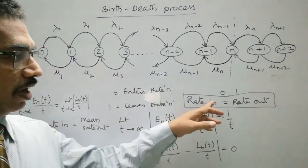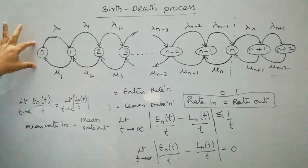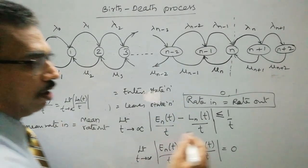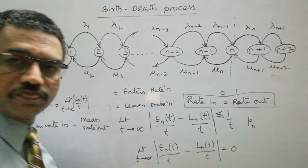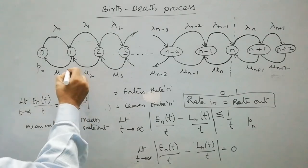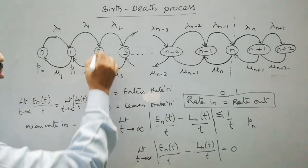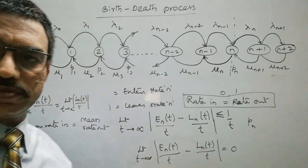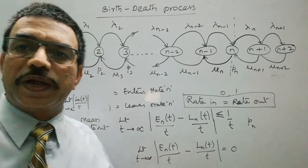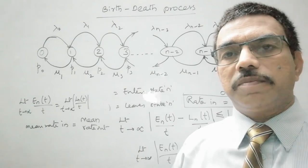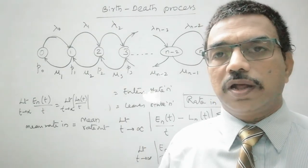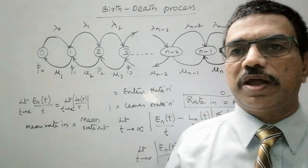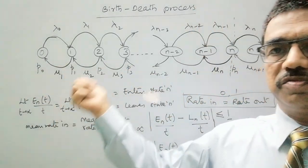Using this expression, we can derive probabilities for all states: state 0, state 1, state 2, state 3, and so on up to state n. Here p_0 is the probability that the system is in state 0, p_1 for state 1, p_2 for state 2, and so on, p_n for state n. Since the sum of all probabilities equals 1, we can find the expected number of customers in the queuing system, the expected number in the queue, the average time spent by a customer in the system, and the average waiting time in the queue.